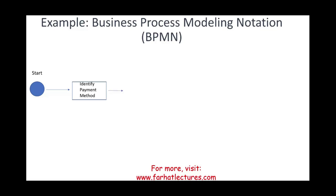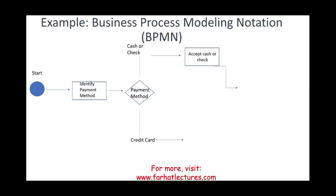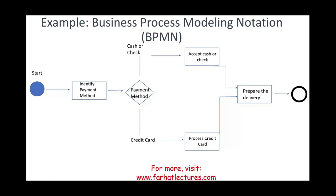The next step is a diamond — a gateway — meaning the customer has options for their payment method. Are they going to pay with cash or check, or use a credit card? If they choose cash, we accept the cash and deliver the product. If they choose credit card, we process the card and prepare the product for delivery. After delivering the product, we end the process. The circle with a solid black border represents the end of the process.